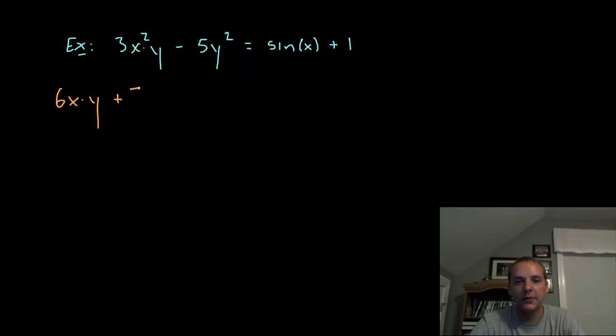Alright, plus the first times the derivative of the second. That's 1 dy/dx minus the derivative of 5y squared is 10y dy/dx equals cosine x. A lot of students forget the other side. They'll differentiate the side with the y's but forget to differentiate the right side that just has constants or not many terms.